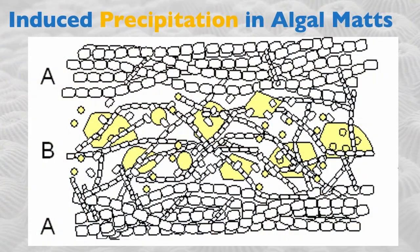The precipitation of calcium carbonate in this case is not controlled — it's induced. The photosynthetic process consumes CO₂ around the cell walls of the algae, inducing an increase in pH that is favorable for carbonate precipitation. That is why we have this induced precipitation.